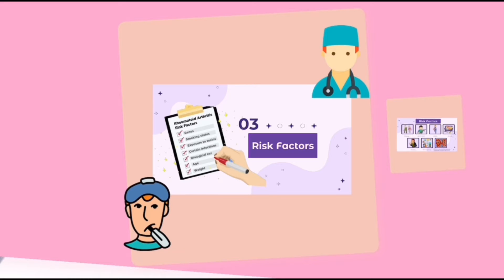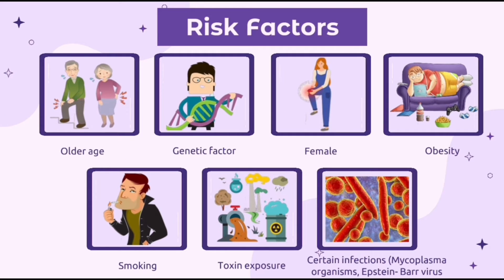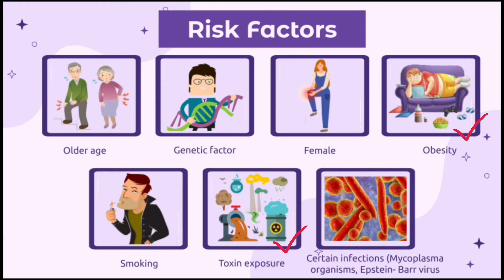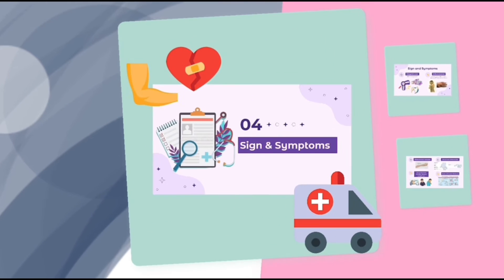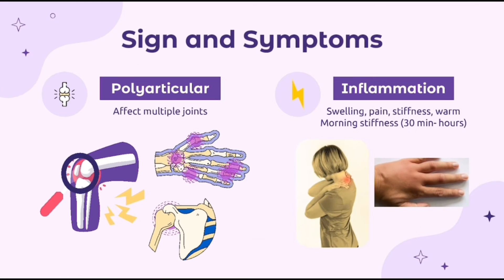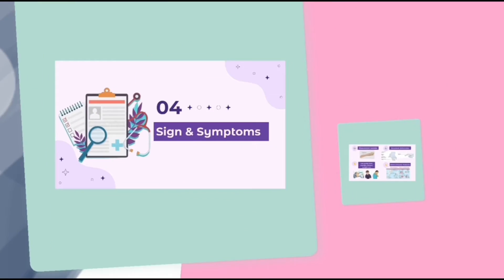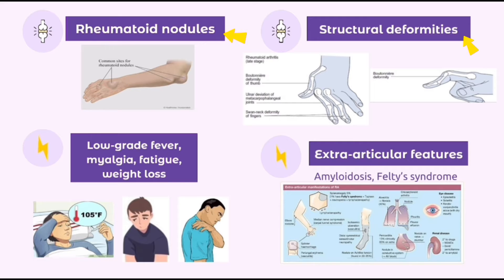In the video, we can see some of the risk factors and signs and symptoms of RA. Besides what we saw in the video, other risk factors may include obesity, smoking, and toxin exposure. It may also be triggered by viral infections such as mycoplasma and Epstein-Barr virus. A person with RA may present with polyarticular inflammation, rheumatoid nodules, structural deformities, low-grade fever, myalgia, fatigue, weight loss, and extra-articular features.